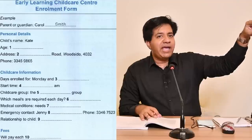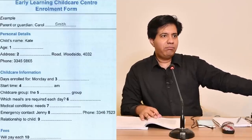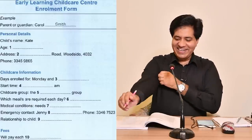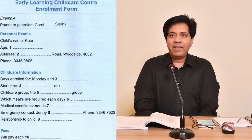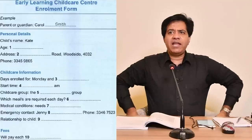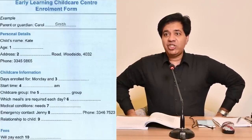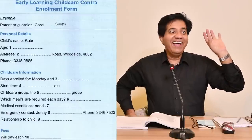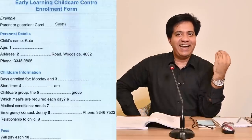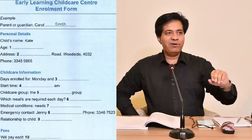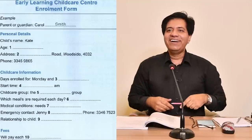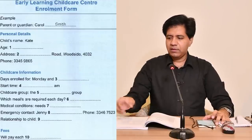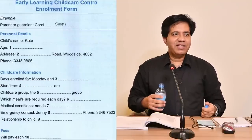Question 9: relationship to child — who is Jenny Ball to that child? The audio confirms she is the child's aunt. The answer is 'aunt.' How do you spell it? A-U-N-T. Remember, the word 'auntie' is informal — in formal English it is 'aunt,' A-U-N-T.